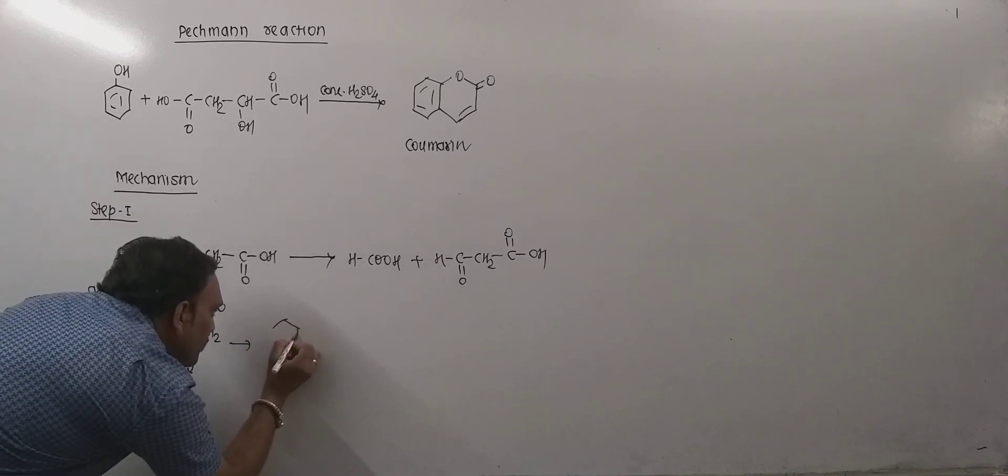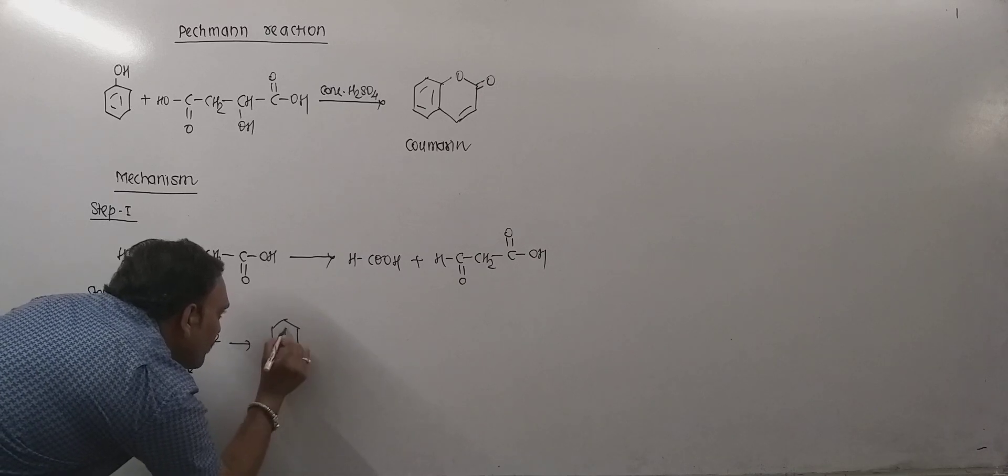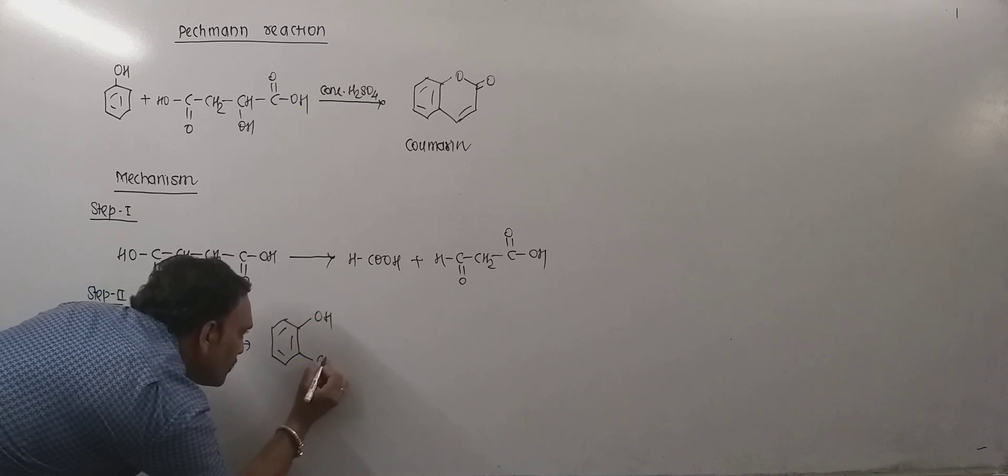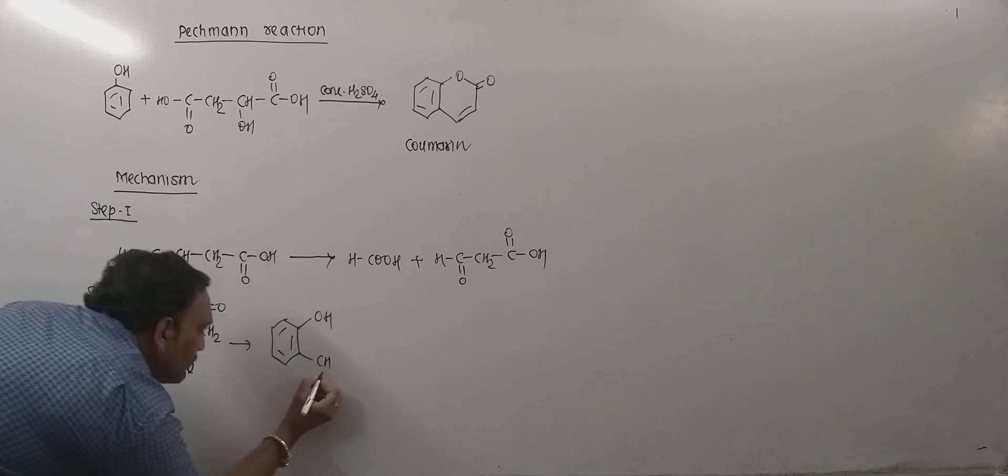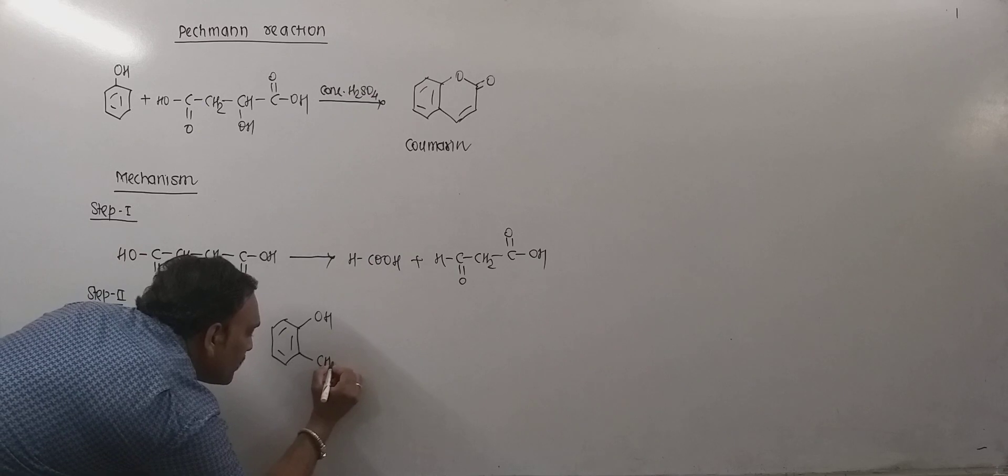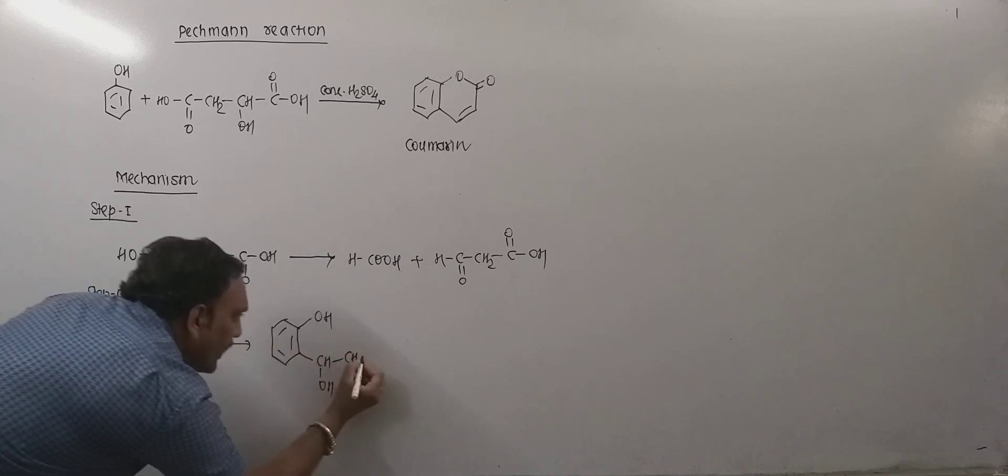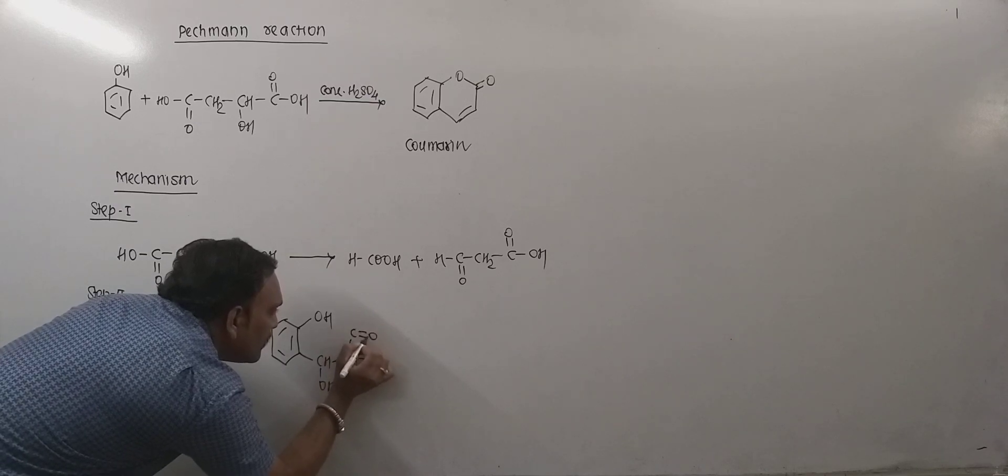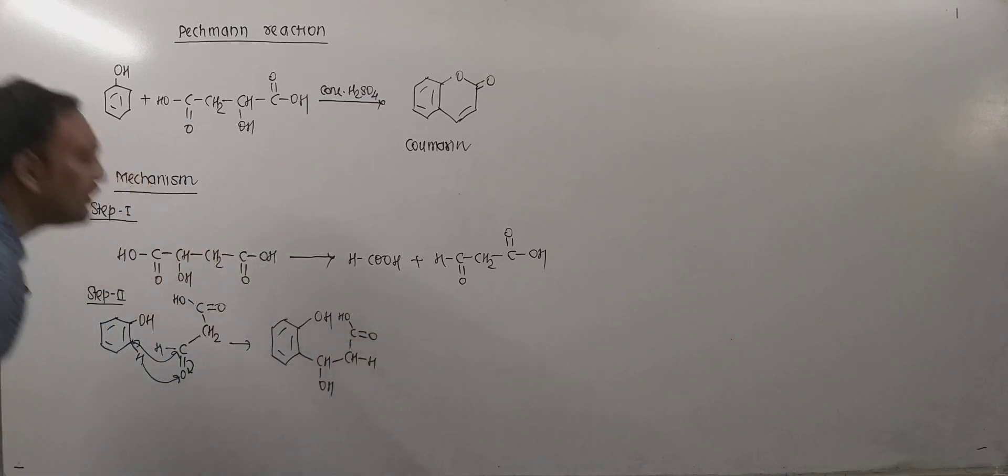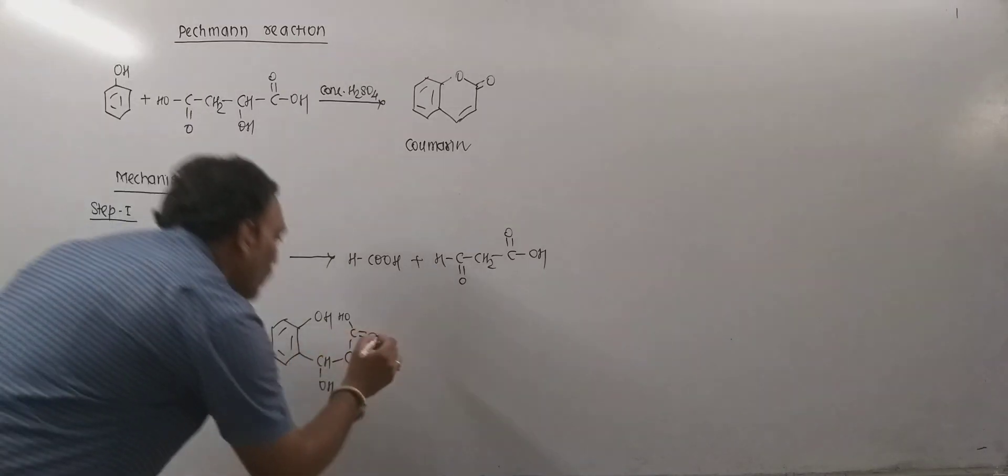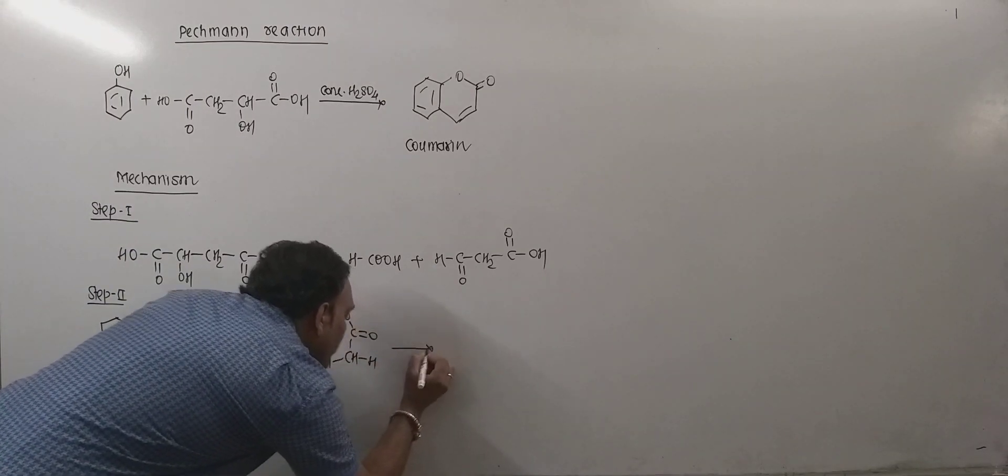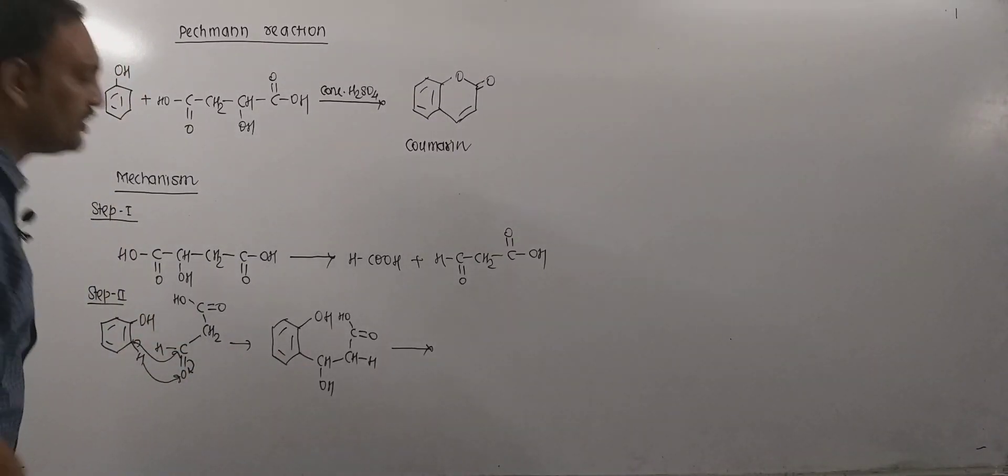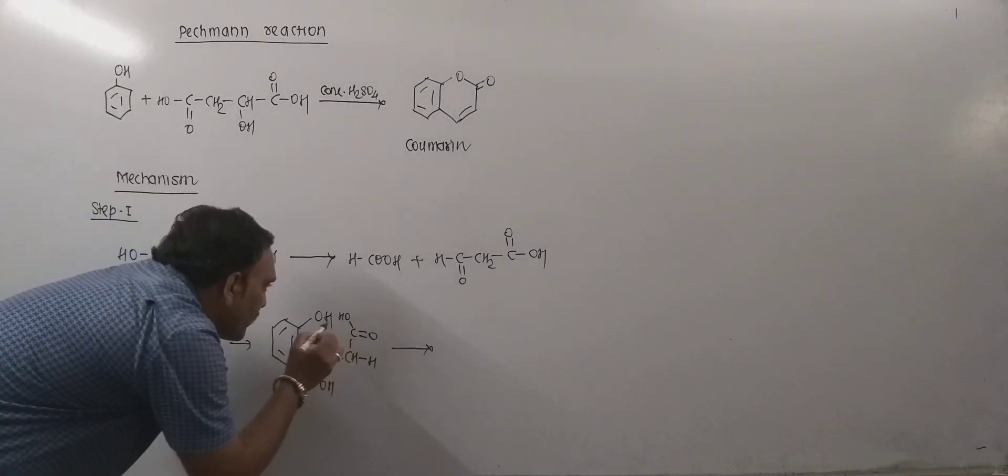Due to addition, the addition product obtained can be given as - this becomes CH OH, and CH2 can be written, and this is COOH. Now further what happens, this intermediate species loses water in this fashion.